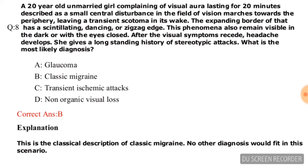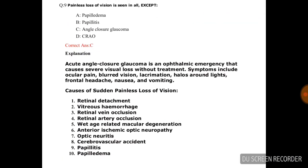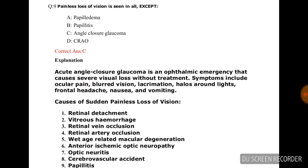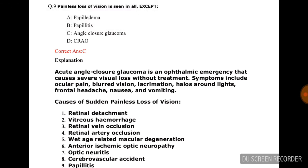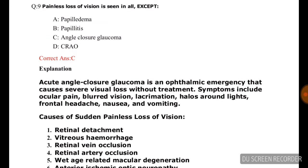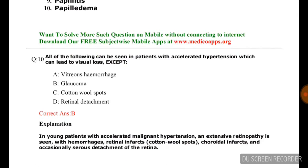Question number nine: Painless loss of vision is seen in all except — options are papilledema, papillitis, angle closure glaucoma, and glaucoma with crow. The correct answer is option C, angle closure glaucoma, as it presents with painful loss of vision.